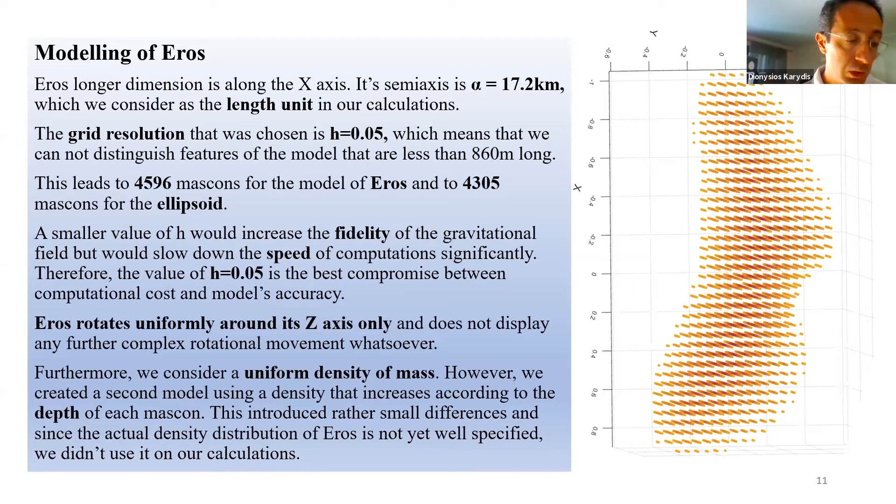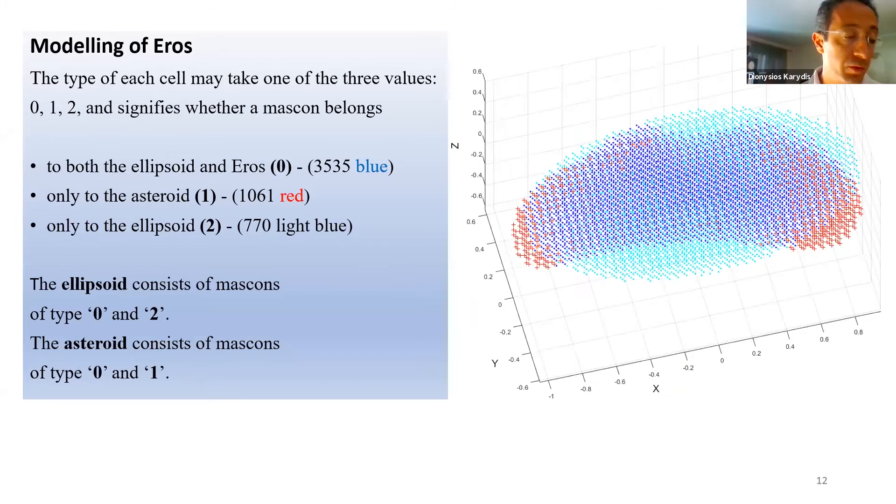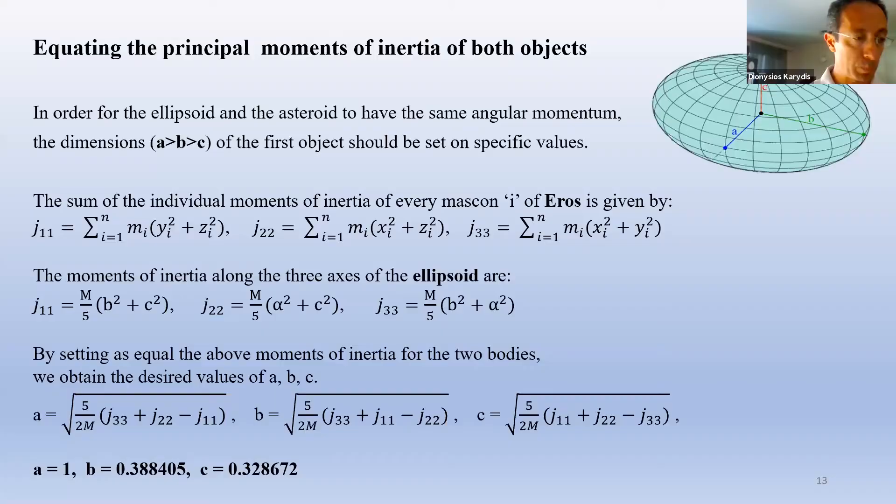While modeling Eros, we set the type of each cell to one of three values that signify whether a mass con belongs first to both the ellipsoid and Eros, secondly only to the asteroid, finally only to the ellipsoid. The next thing we need to do is to equate the principal moments of inertia for both objects. In order for the ellipsoid and the asteroid to have the same angular momentum, the dimensions or semi-axis a, b and c of the first objects should be set on specific values.